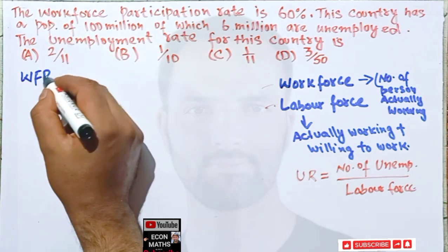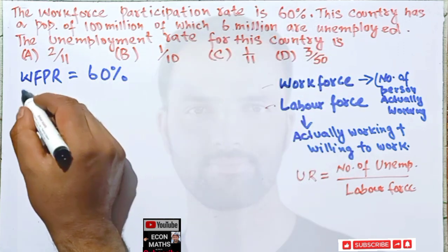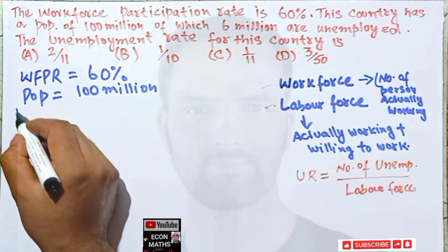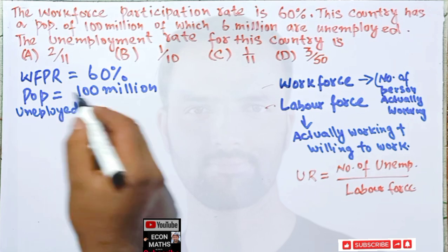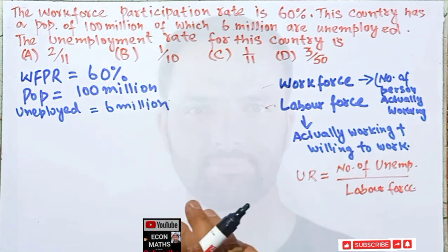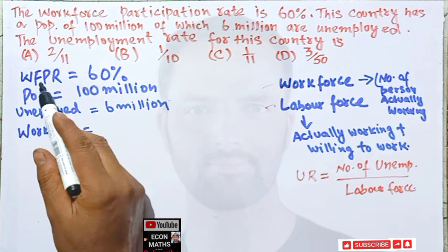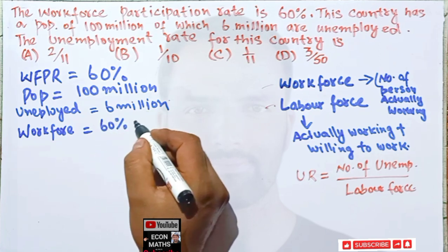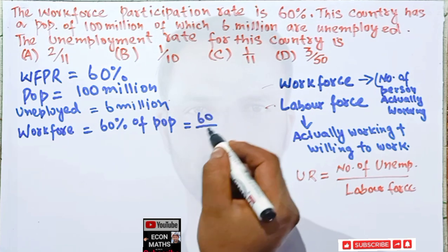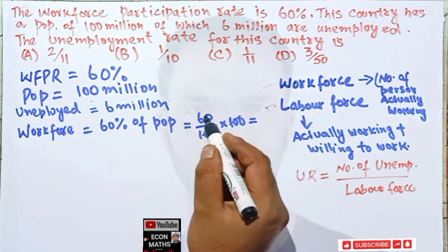We are given the workforce participation rate, which is 60%. The population is 100 million, and the number of unemployed is 6 million. First, we need to find the workforce. Workforce equals 60% of population, which is 60/100 × 100 million. The 100s cancel, so our total workforce is 60 million.